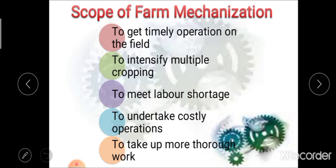The next scope is to undertake costly operations. Due to the use of machines, it is possible to take on different costly operations that would otherwise be difficult to perform. Another scope is to take up tougher work, as deploying plowing and harrowing machines would be more beneficial than human or animal labor. These are some of the major scopes of farm mechanization.